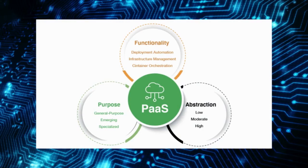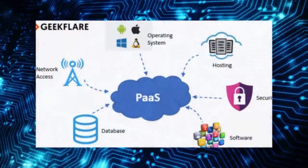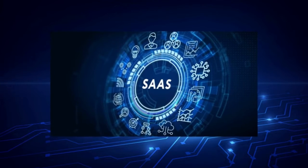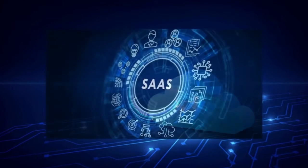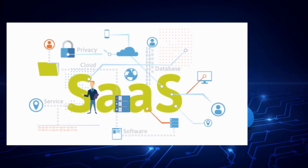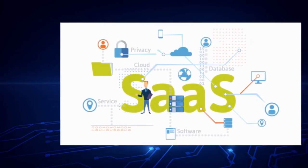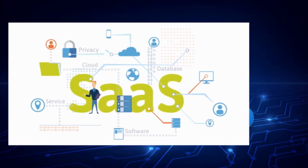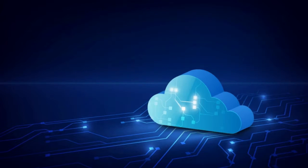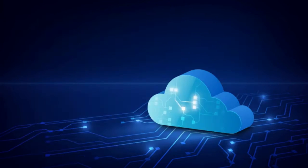Examples of popular PaaS providers include Heroku, IBM Bluemix, and Salesforce Platform. Software as a service (SaaS) is a cloud service model that provides software applications over the internet. With SaaS, businesses can access and use software applications on demand without having to install, manage, or update them themselves. SaaS can be a great option for businesses that want to reduce their software licensing and maintenance costs. Key features of SaaS include easy deployment, automatic updates, and pay-as-you-go pricing.